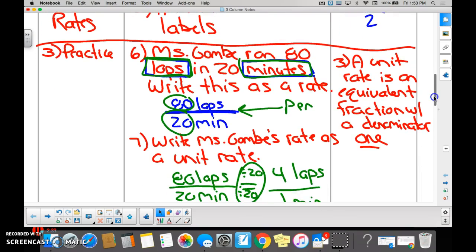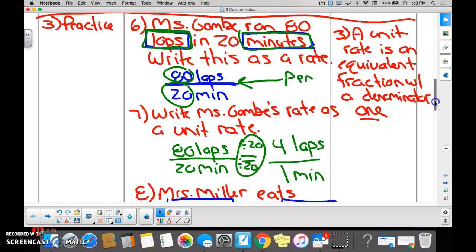Number seven said, write this as a unit rate. Well, how do you get that second number to a one? Because you guys told me unit rates end in a one, right? So, how do we get this 20 minutes down to one minute? What do we do? Reduce. A lot of you like to say simplify. You just simplify so that you get that second number as a one.